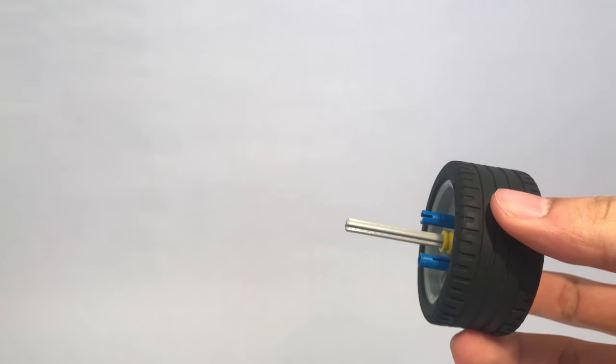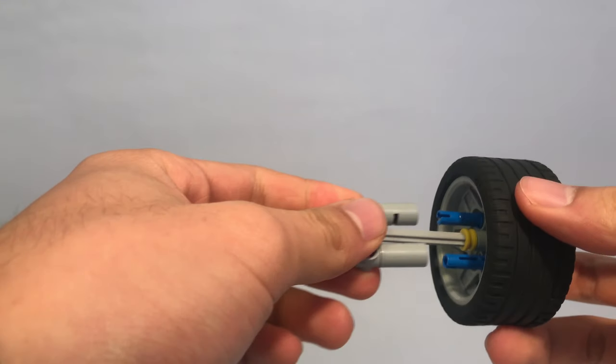If you need the wheel to be further away from the motor, you can always use the connecting structures in my previous videos.